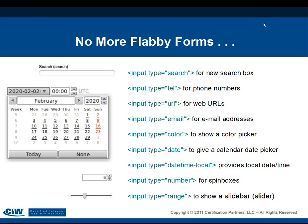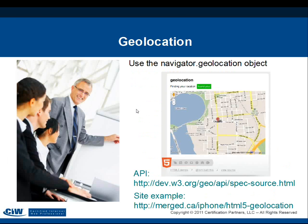HTML5 provides much more robust form input types than previous versions. In addition to the familiar radio and checkbox inputs, new types include search, URL, email, color, number, and many others — making forms more descriptive by content type and visually more appealing for users.